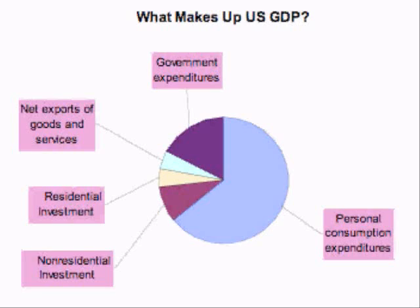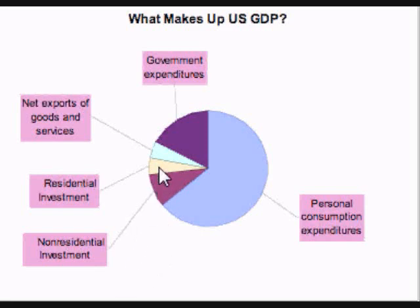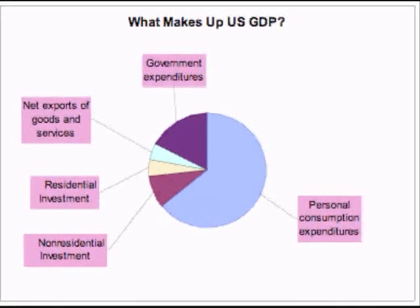If the GDP is declining, companies produce less, reducing employees and total income, which leads to less spending. After consumer spending, the next important part of GDP is investment spending — not stocks and bonds, but companies spending money to grow and expand by adding new equipment, factories, and buildings. When a company expands, it adds to production capability. Looking at the graph, residential investment is about half of non-residential investment — roughly a two-to-one ratio.